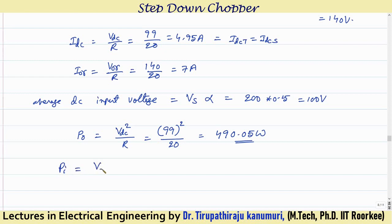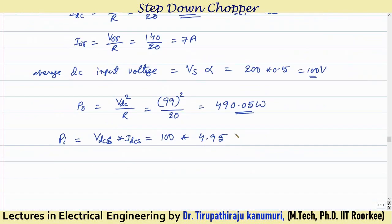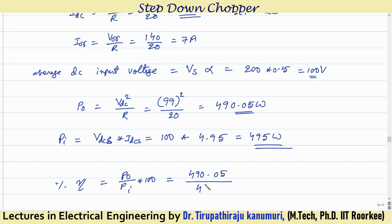DC input power = V_DC_input × I_DC = 100 × 4.95 = 495 W. Percentage efficiency = (490.05 / 495) × 100 = 99%. These are the two possible cases they can ask in the exam.